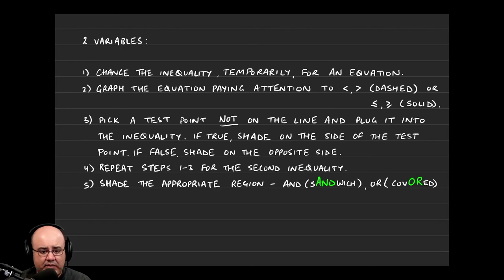And then, again, just as we have in the past, you pick a test point that is not on the line, and you plug it into the inequality. If you get a true statement, the point is telling you the truth, you shade the side that the test point is on.